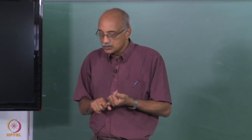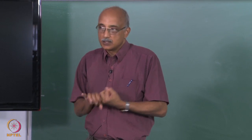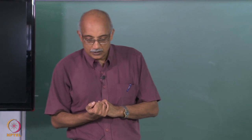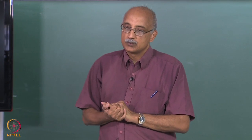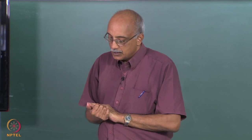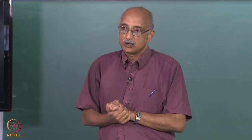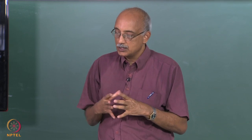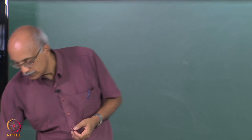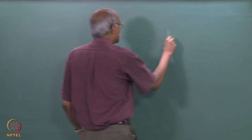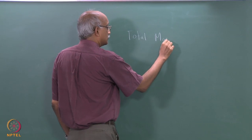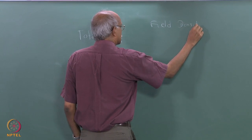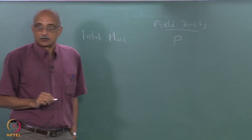Once you have looked at your system, made certain assumptions, and defined your control volume, the third step is to start writing your conservation equations. Before writing them you first have to define something called the field density — associated with each conserved quantity we have a field density parameter, which is a representation of that quantity per unit volume of the fluid. For example, for total mass conservation, the field density parameter is the density of the fluid itself, rho.